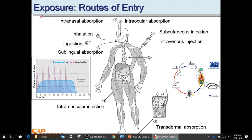Then there's subcutaneous injection. The cutaneous layer is that fatty layer underneath your skin — epidermis and dermis and then subcutaneous fat. You can put a fat-soluble drug in there and it will be released slowly over time. Then intramuscular injection drives it into the muscle and it slowly comes into the bloodstream.